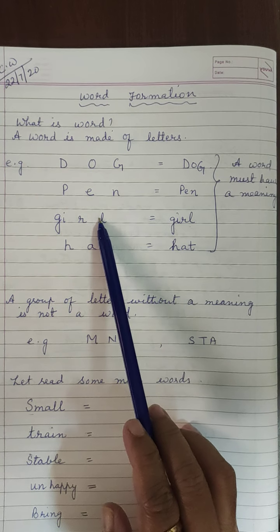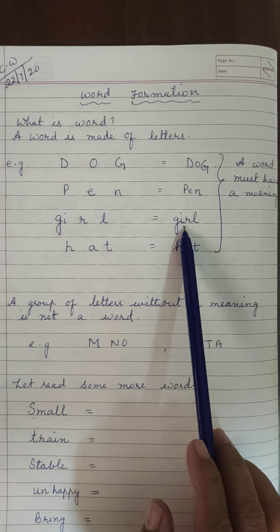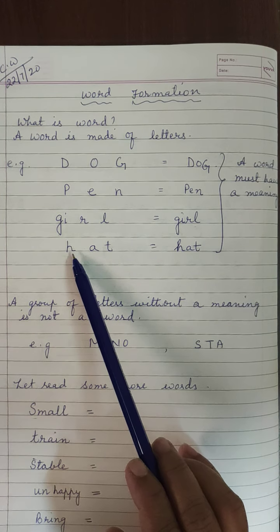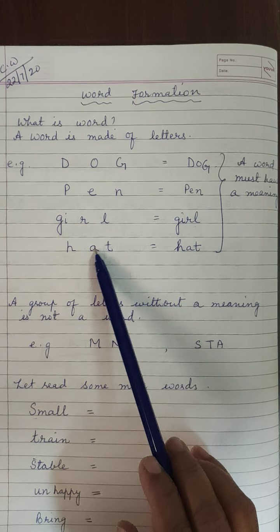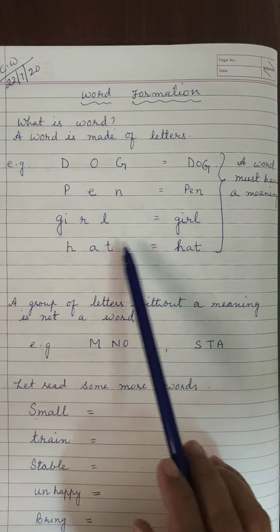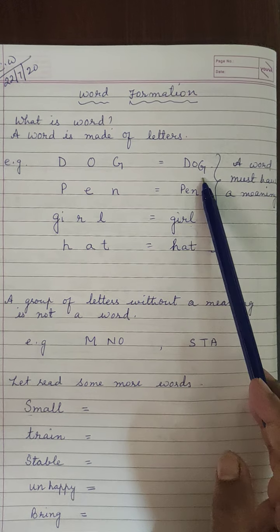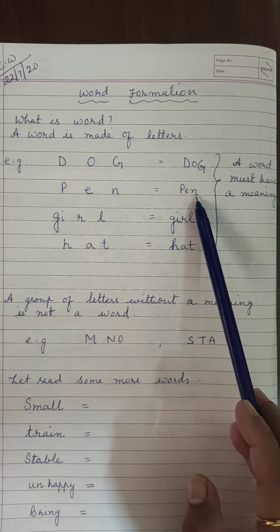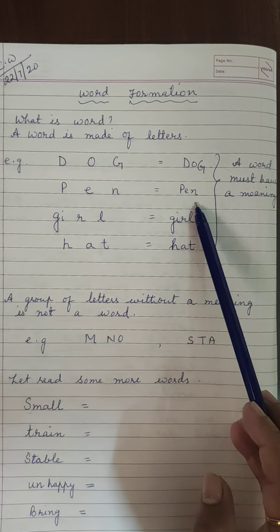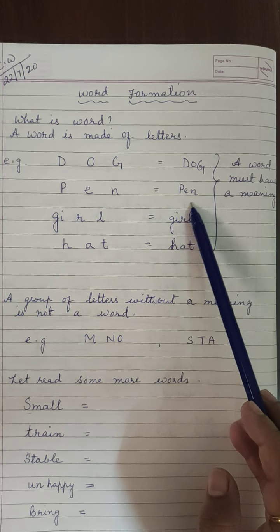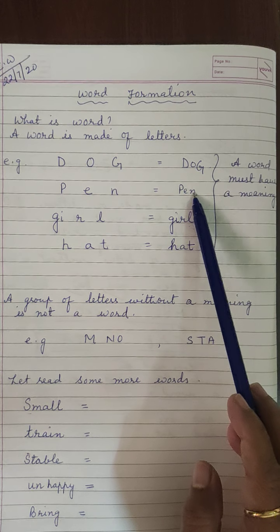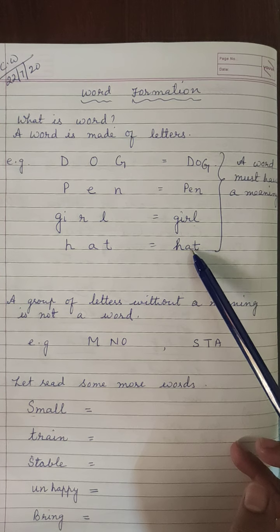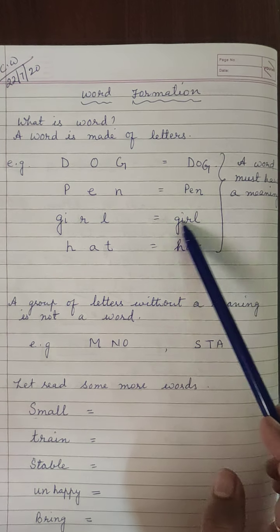Next, G, I, R, L — we joined all these letters and got the word 'girl'. Next example, H, A, T — when we joined all these letters we got the word 'hat'. So all these are meaningful words. A word must have a meaning. For example, dog is an animal name, pen is a thing, girl is a noun — a naming word — and hat is also a thing.